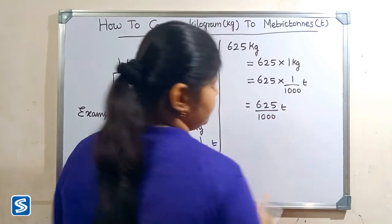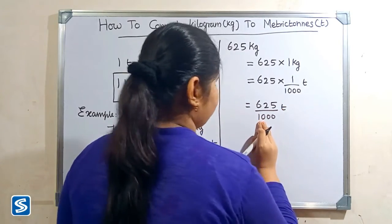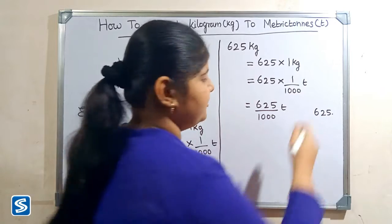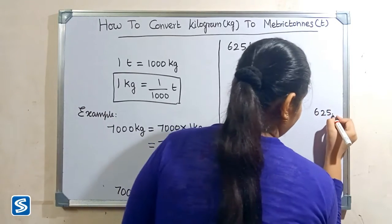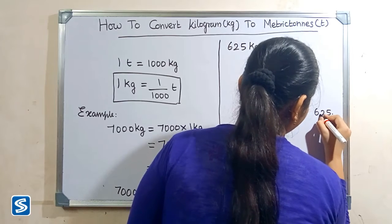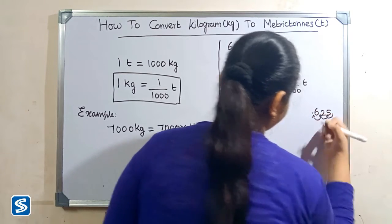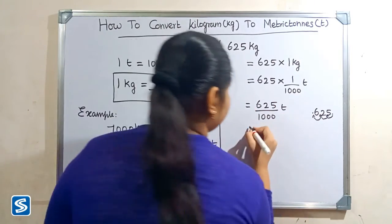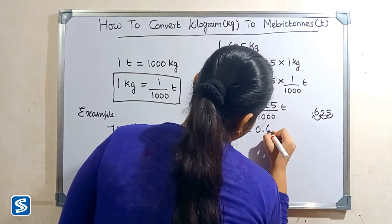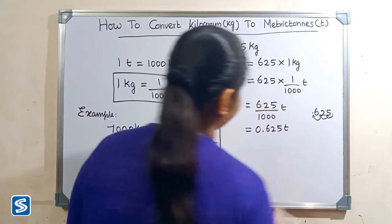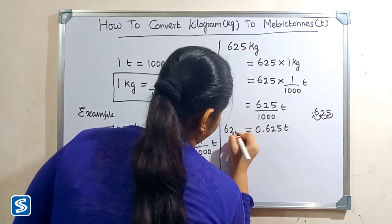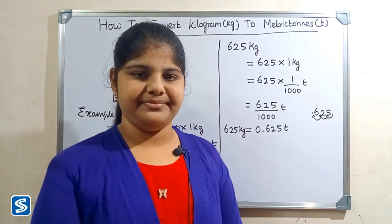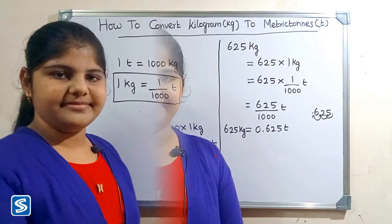The easy way to divide by 1000 is to move the decimal point 3 places to the left: 1, 2, 3. So when we divide 625 by 1000, our answer will be 0.625 tons. So 625 kilograms is equal to 0.625 tons.